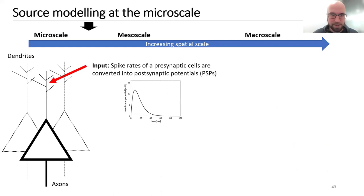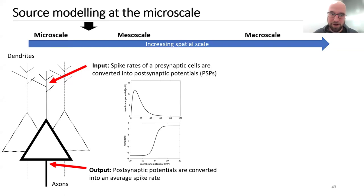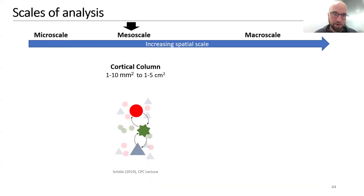To recap: we can use a synaptic response kernel — a convolution — to convert spike rates of presynaptic cells into postsynaptic potentials. To convert postsynaptic potentials into an average spike rate, we use the sigmoid function. We have already moved closer to the mesoscale because the mean field approximation considers a population of neurons — we're no longer at the microscale, and we'll continue moving up.